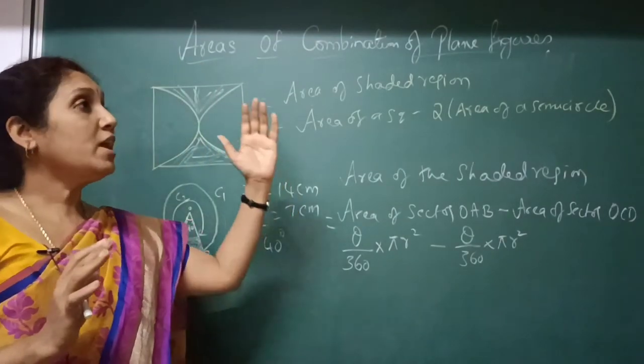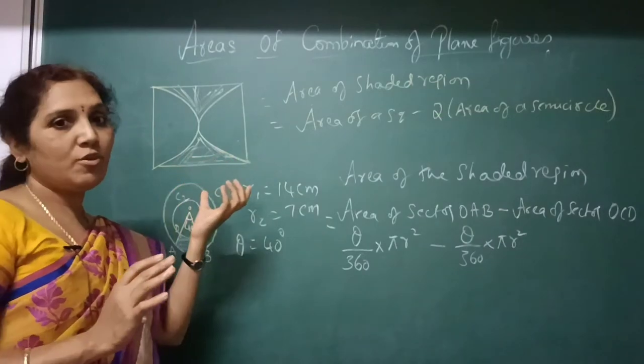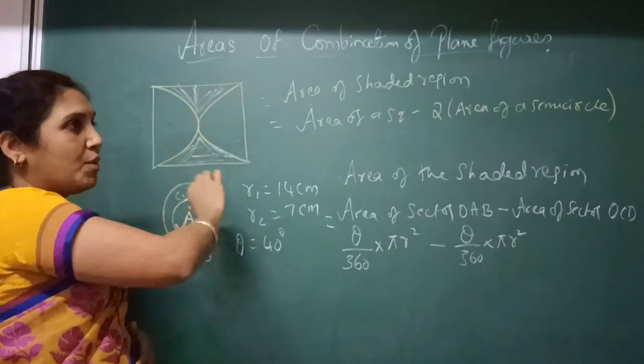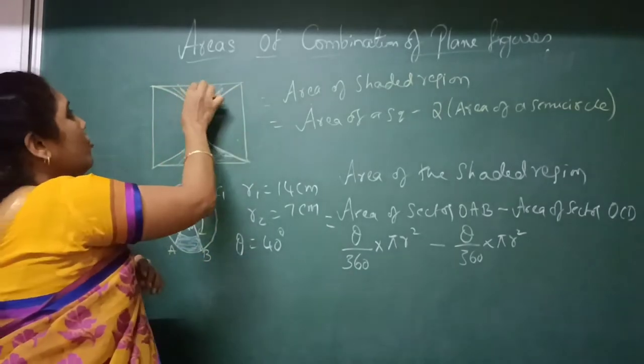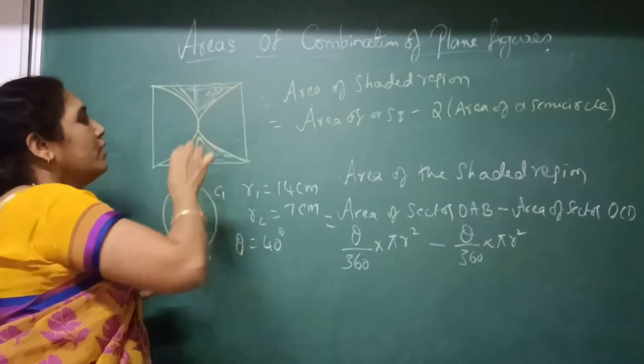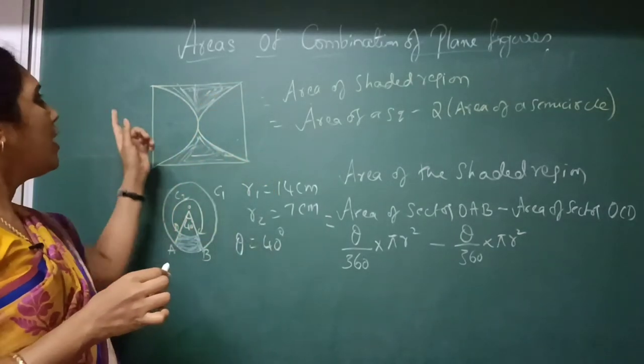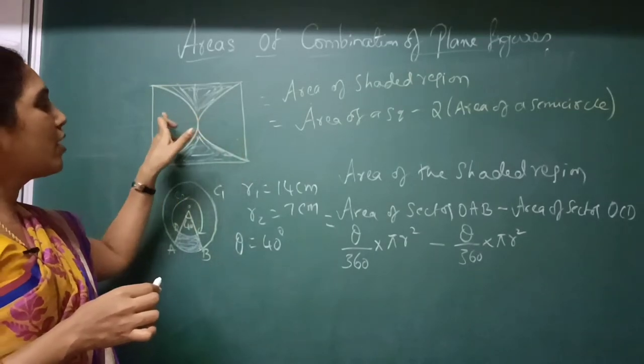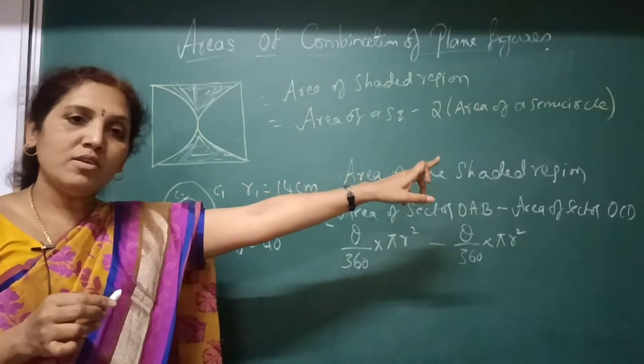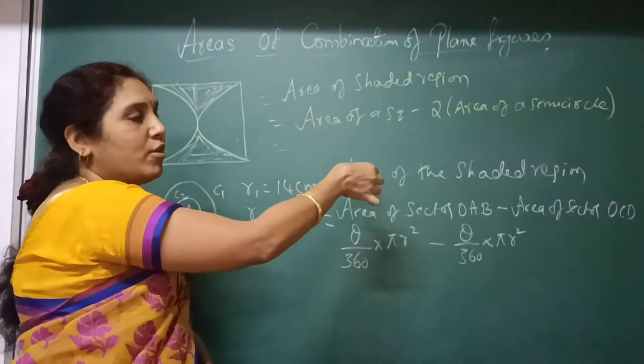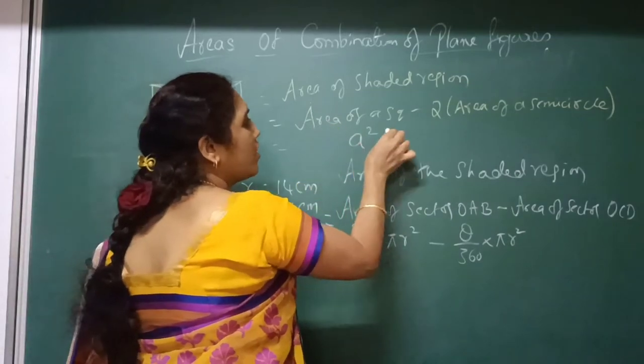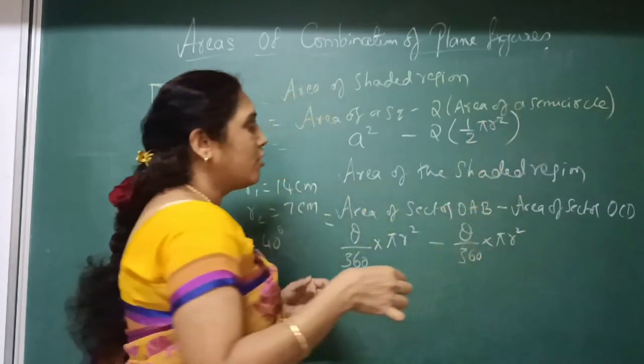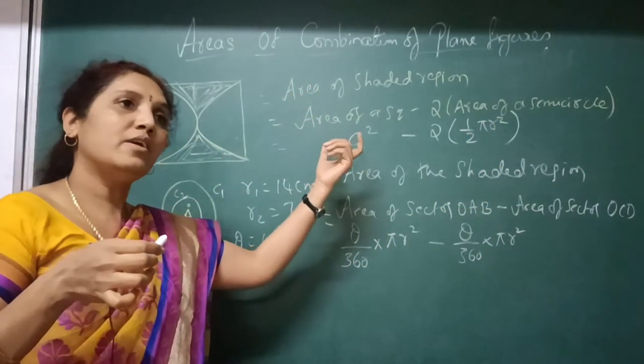See, in the previous one, I have solved the complete sum. But now, I will just brief you how to do it. Suppose if there is a square and there are two semicircles, how are you going to find a shaded region? This is your shaded region. Area of shaded region is equal to area of a square minus—yes, since there are two semicircles—you are writing two times area of a semicircle. And then you will be writing the formula for all this. You know that area of a square is a square, and then area of semicircle is equal to 1 by 2 pi r square. You are going to substitute the values and get the answer.